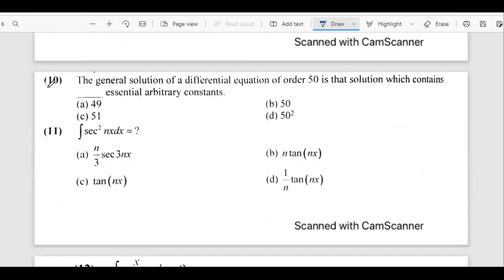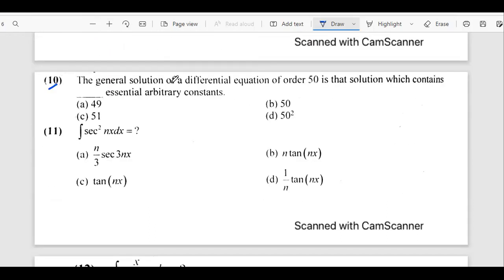Let's talk about question 10. It says, the general solution of a differential equation of order 50 is that solution which contains dash essential arbitrary constants. So basically, if the solution of differential equation of nth order contains n arbitrary constants, then it is called the general solution. So since it is the general solution, and the order of the differential equation is 50, this means that it is going to have 50 arbitrary constants.